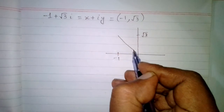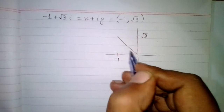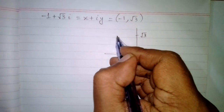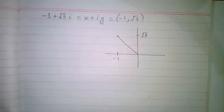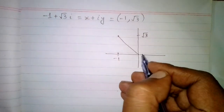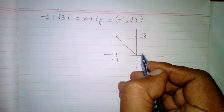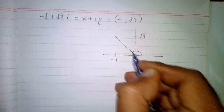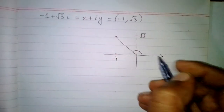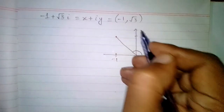This point is lying in the second quadrant, and it is making an angle of theta with the x axis.